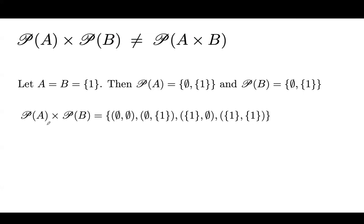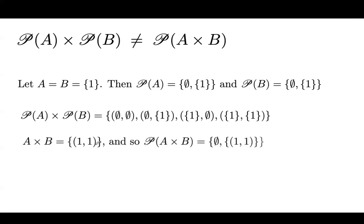So the Cartesian product between the power set of A and the power set of B has 4 members. Now, if you form the Cartesian product between A and B, it is just the set including the ordered pair (1,1). The power set of the Cartesian product between A and B includes only the empty set and the set itself — just 2 members. Obviously, these two sets are not equal because the first set has 4 members and the second has only 2.